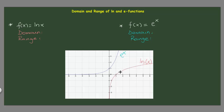These two functions are inverse to each other and they are symmetrical with respect to the line y equal to x. So I'll put a line here in between — they are symmetrical to this line here, y equal to x.